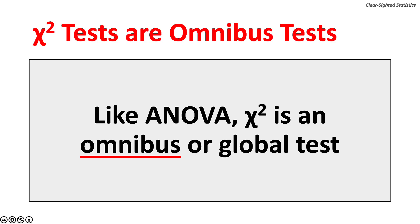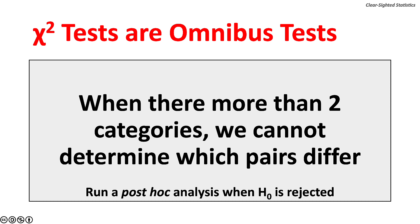Like ANOVA, Chi-square is an omnibus or global test. When there are more than two categories, we cannot determine which pairs of categories differ. We must run a post-hoc analysis when the null hypothesis is rejected. However, this lecture will not cover those post-hoc analyses.